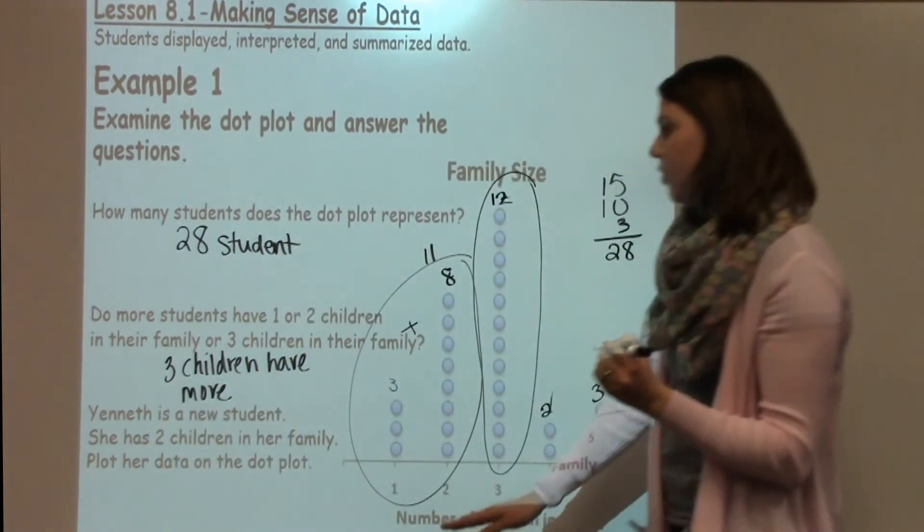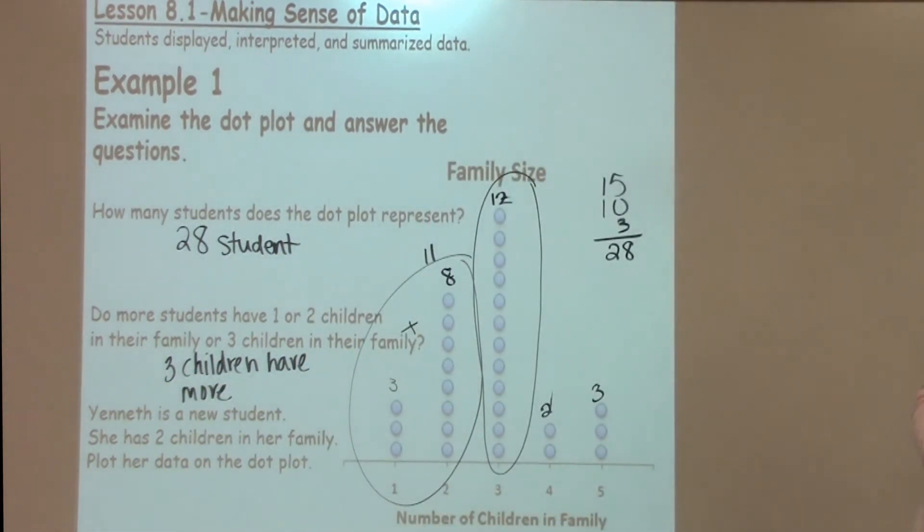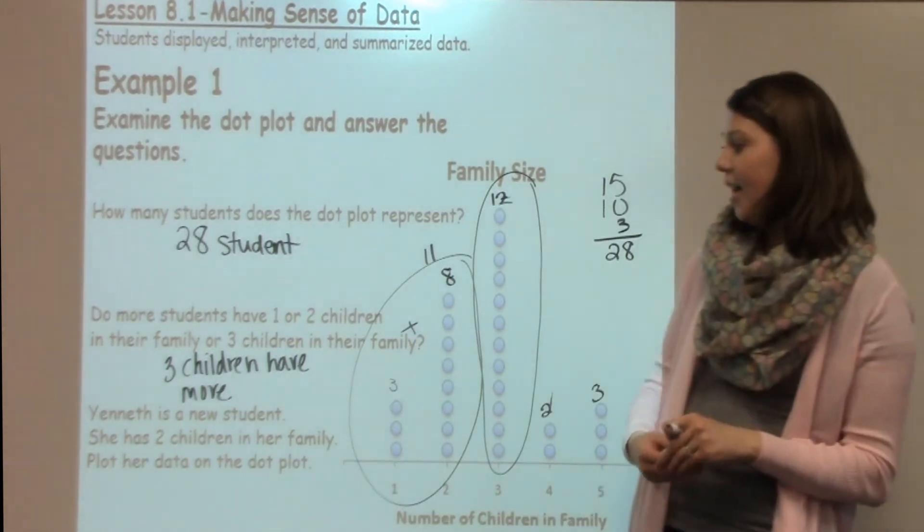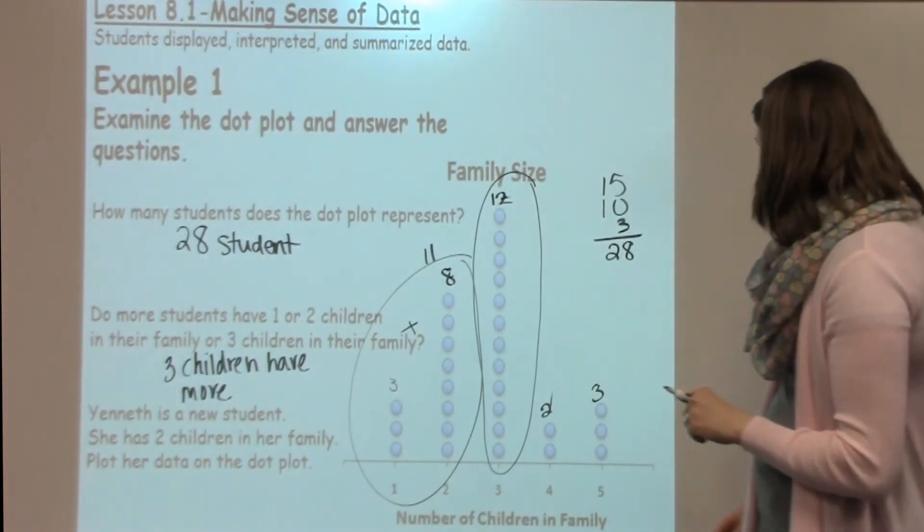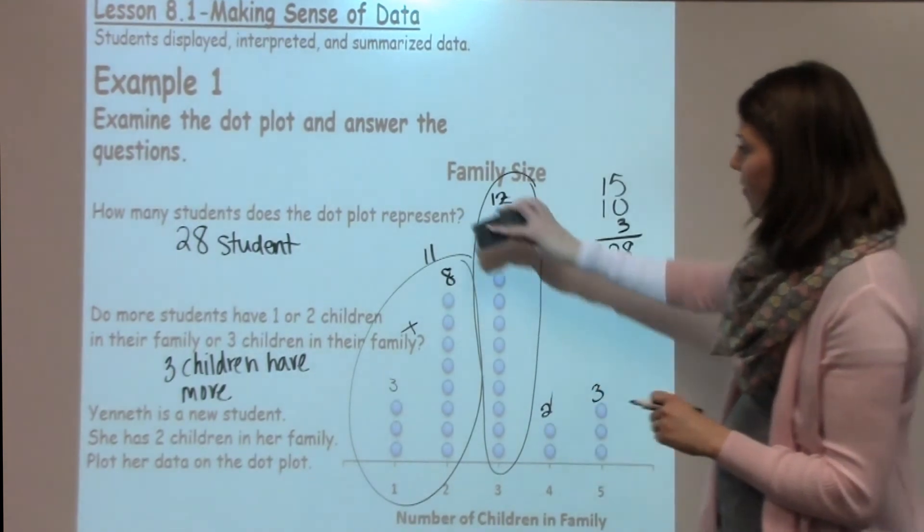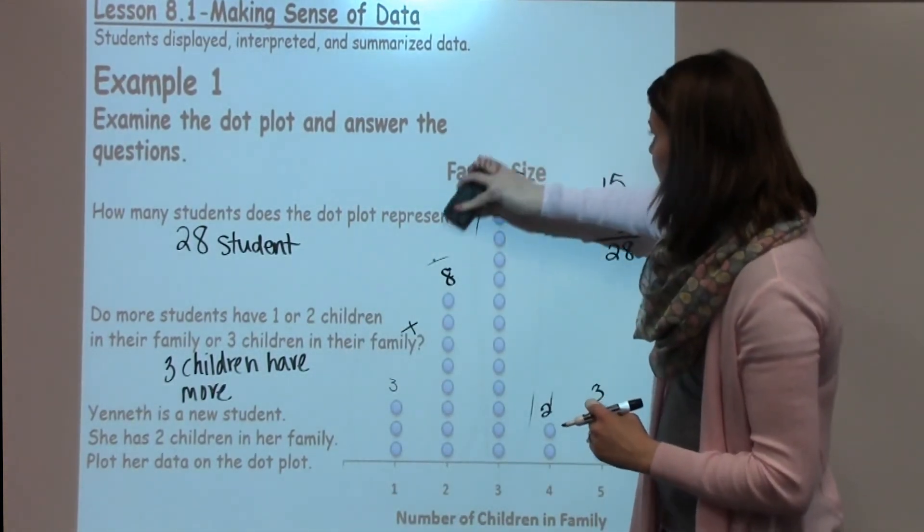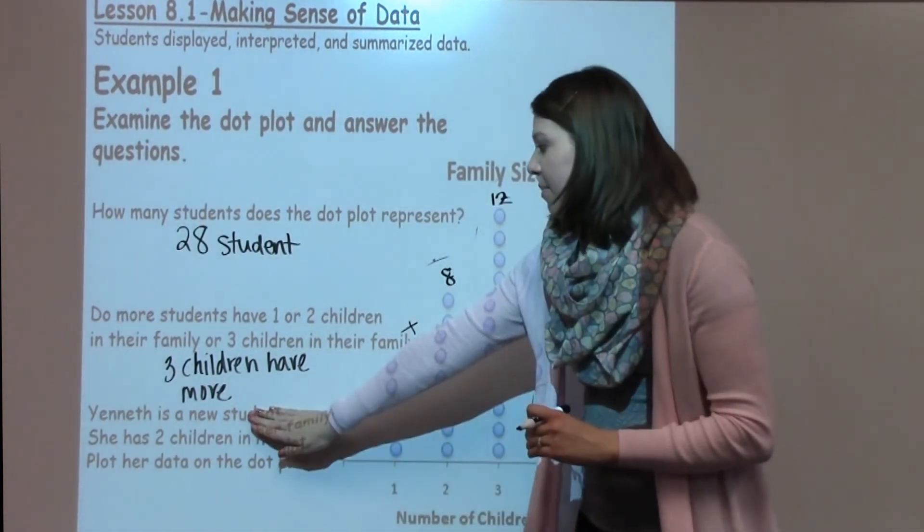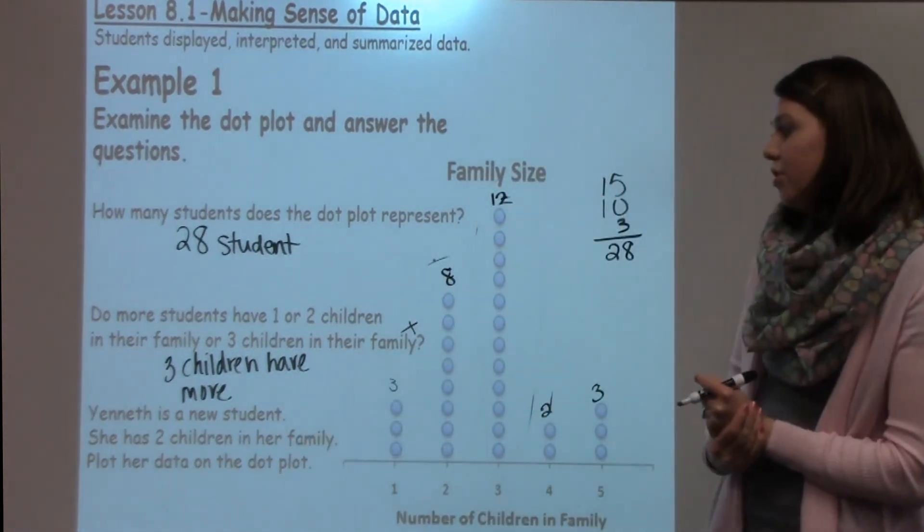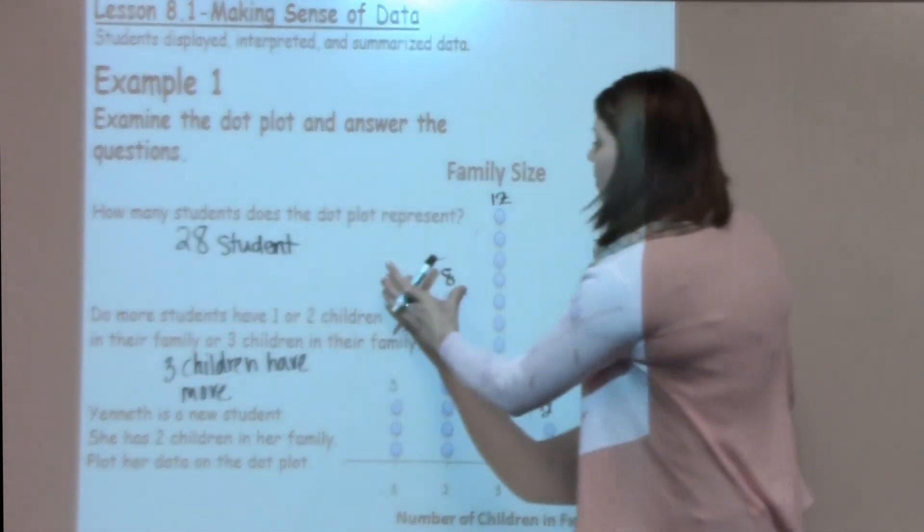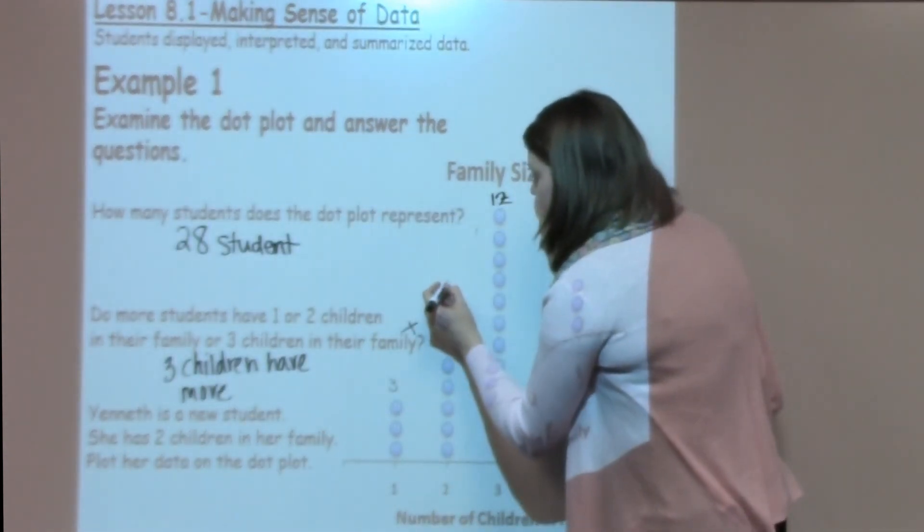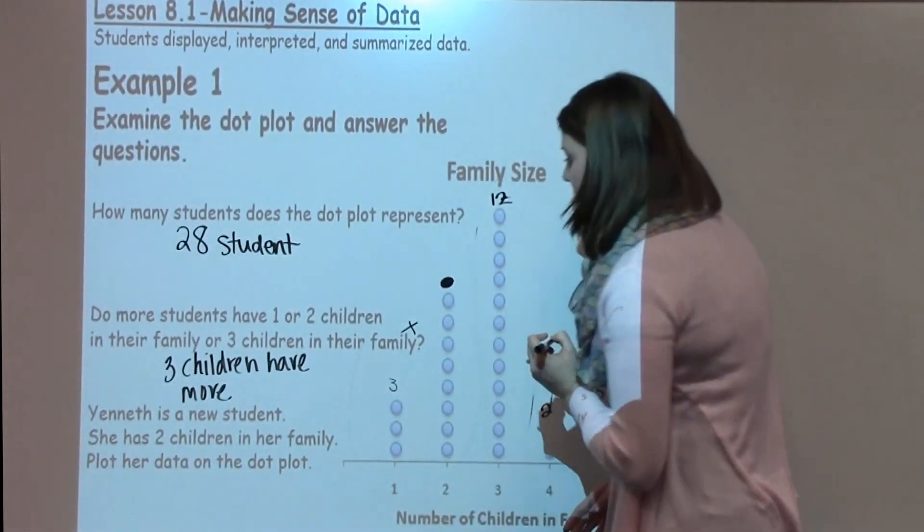This last question says Yeneth is a new student. She has two children in her family. Plot her data on the dot plot. When I look at this one I'm going to go ahead and erase my circles from the previous question, and I'm going to answer this where I'm going to put Yeneth is a new student. She has two children in her family. Where does she go on the dot plot? Well in this case I'm going to add a circle for Yeneth on the dot plot.